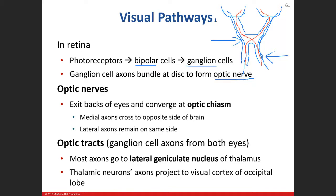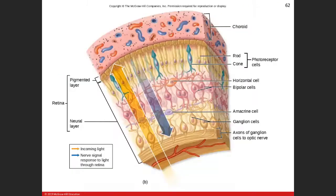Those optic tracts head back to the thalamus and a couple of other places. Most of the axons traveling in the optic tract go to the thalamus — specifically the lateral geniculate nucleus. We'll talk about the medial geniculate nucleus when we cover one of the future senses. From there, those axons travel back to the occipital lobe, to the visual cortex.